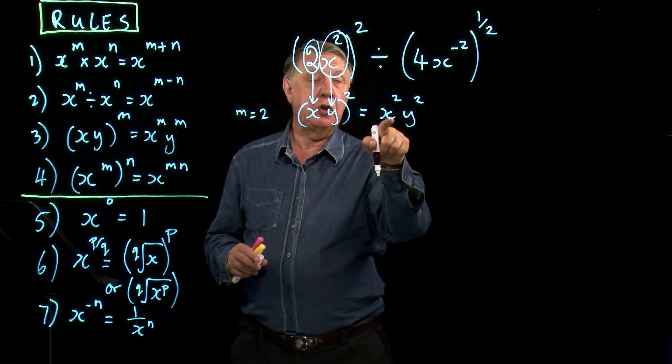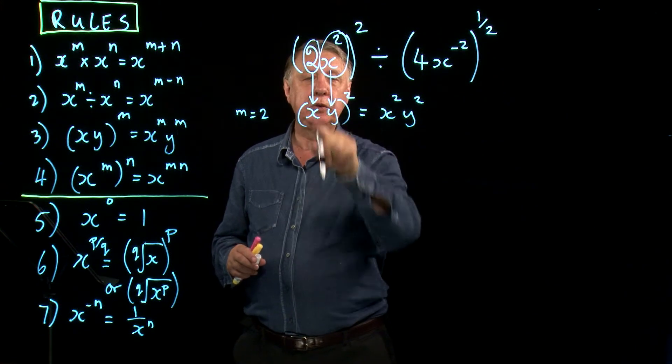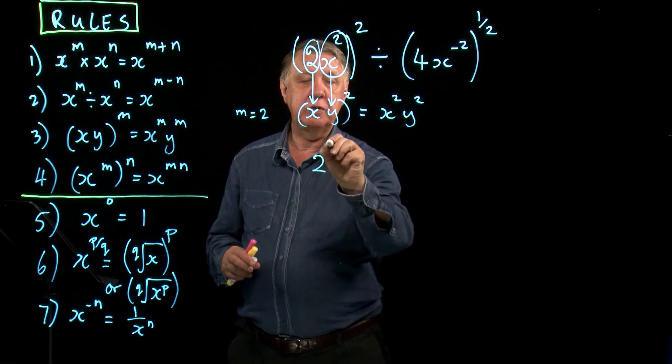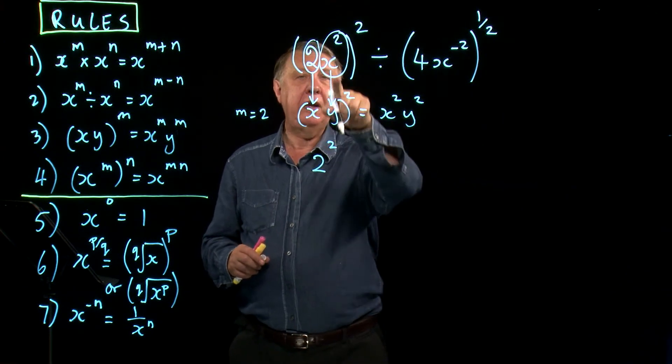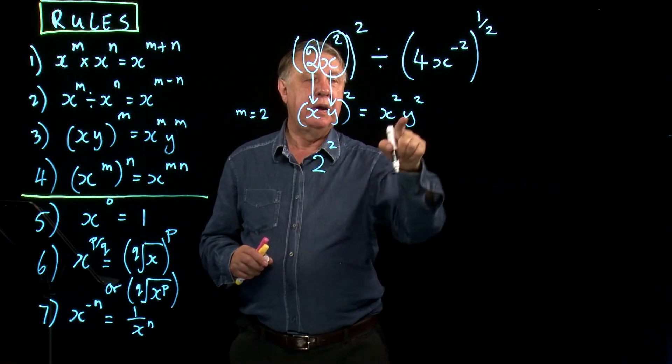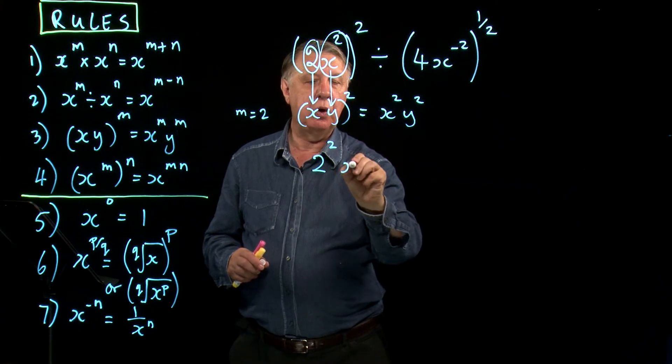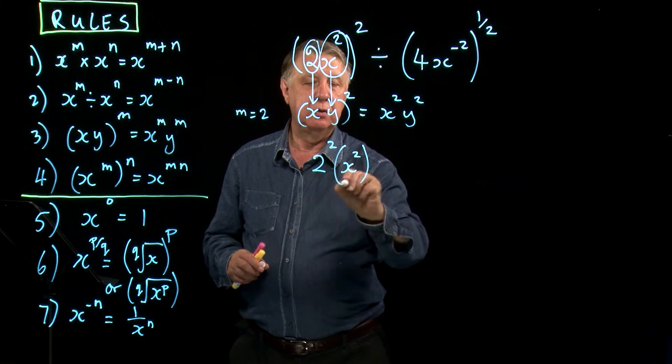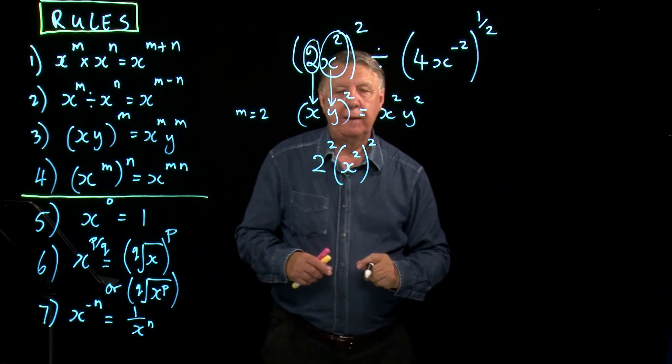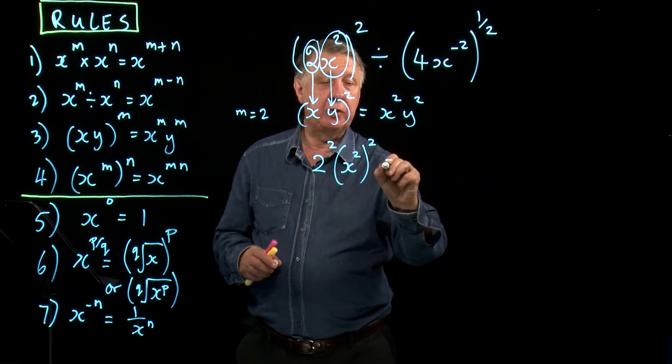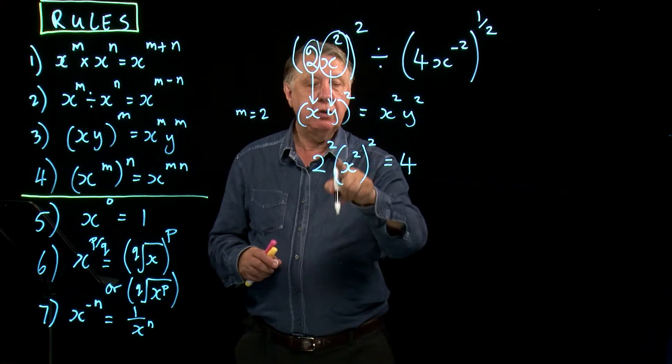So what does it tell me to do to get the answer? It says that it's got to be x squared. So x is 2, so that's 2 squared. y is x squared. It tells me I want y squared. Well we all know that 2 squared is 4.